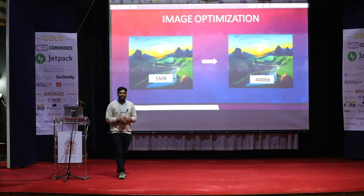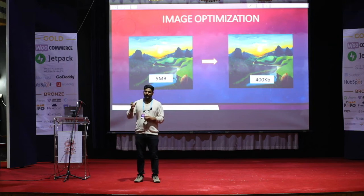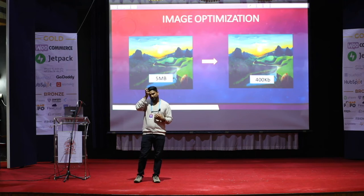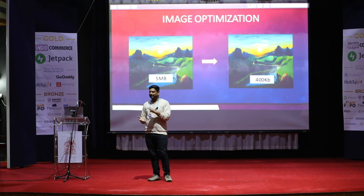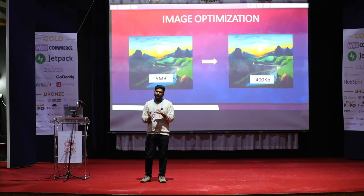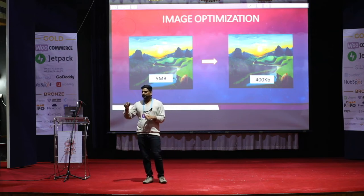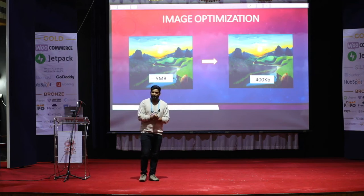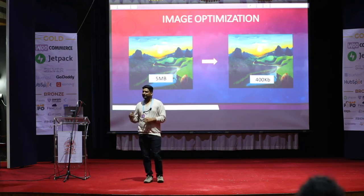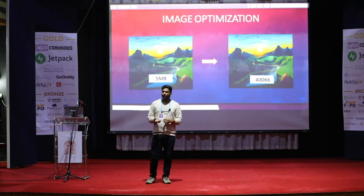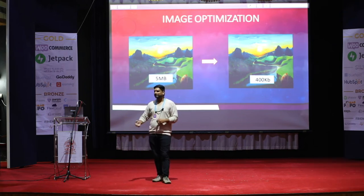Then there's image optimization. If you've ever analyzed a website, it will almost always show image optimization or compress images as an issue. For example, if you upload a 5 MB image, the page size becomes 5 MB plus all other resources. When you compress that image down to maybe 400 KB, the page size reduces significantly. That's what image compression means. You can use any image compression tool available online, or use a plugin for it.